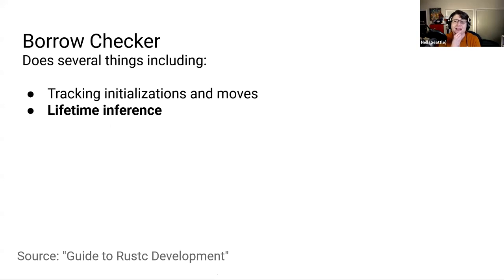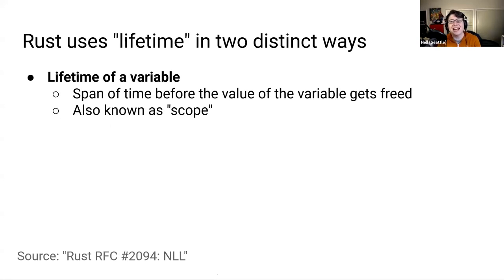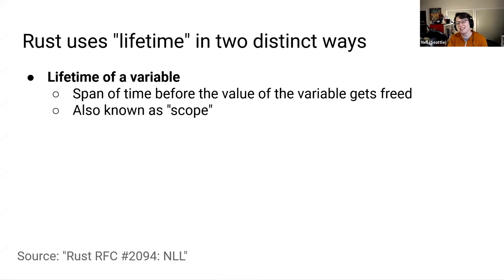Along with tracking initializations and moves, the borrow checker also deals with lifetime inference. Rust uses the word lifetime in two distinct ways. The first is to refer to the lifetime of a value — that's the span of time before the value is freed. Another word for referring to the lifetime of a value is referring to variable scope. Let's see how this plays out in our code.